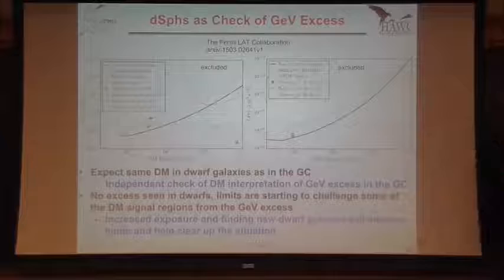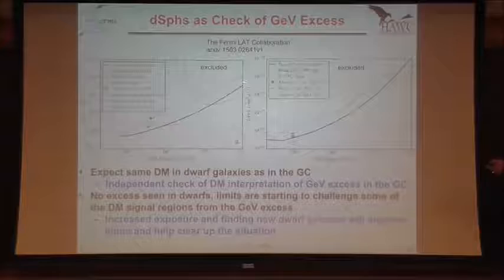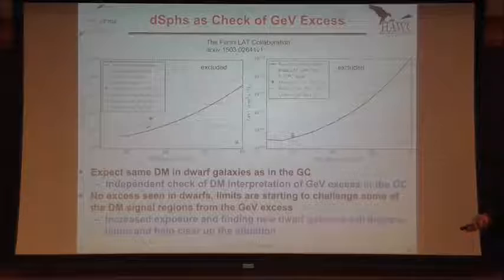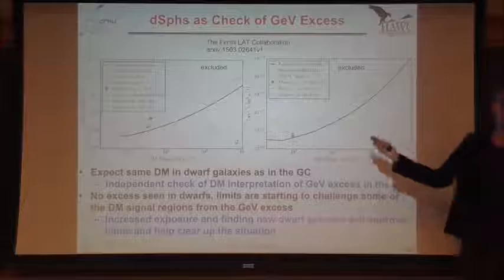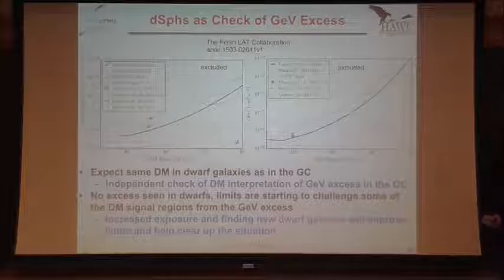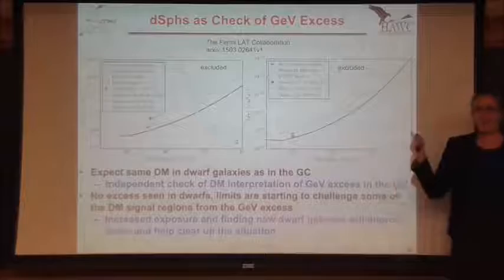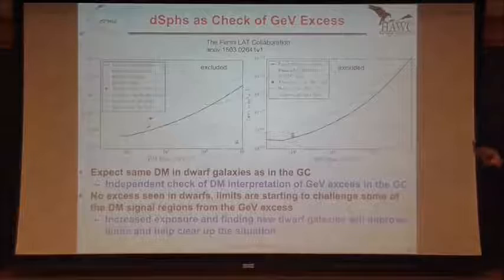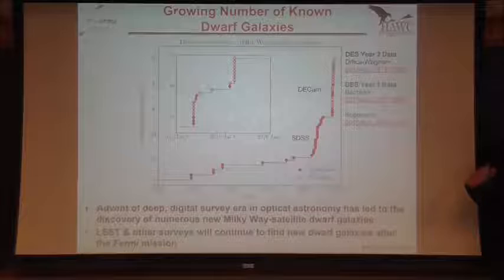With more exposure, things will get better. The other thing that will help is finding new dwarfs. Even undiscovered dwarfs could be anywhere in the sky, and our wide field-of-view survey instruments have already observed them — we just didn't know where to look in our data. We're seeing new dwarfs now from optical surveys. The way you find them is by looking for overdensities of stars and measuring their velocities — they're whipping around way too fast to not be gravitationally bound by dark matter. We now have the Dark Energy Survey, and in the future LSST. The total number of known dwarf galaxies has jumped in the Sloan era and again with DES. Some of the new DES objects are as good as our current best dwarfs, including one I'm very excited about: Triangulum II, discovered by PanSTARRS, which is in HAWC's field of view.